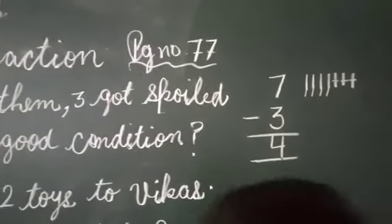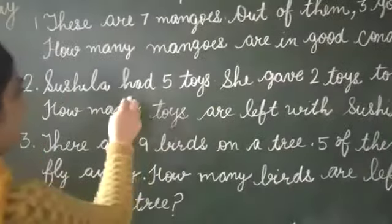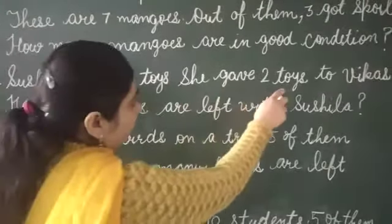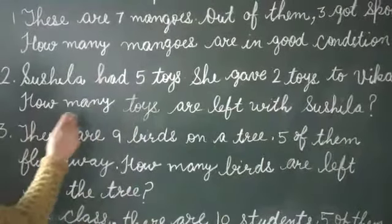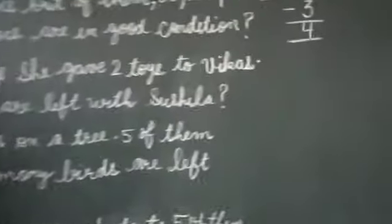Now next is, Sushila had five toys. Sushila ke paas kitne toys hai? Five. She gave two toys to Vikas. Two jo toys usne Vikas ko de diye hai. How many toys are left with Sushila? Ab Sushila ke paas kitne toys hai?